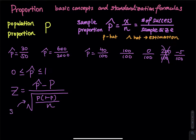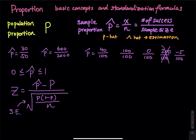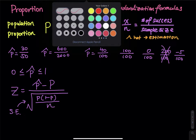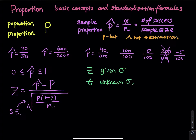A common question is: when you see a problem, how do you know it's a proportion problem versus a z problem or a t problem? For a z problem, sigma is given. For a t problem, sigma is unknown so you use the sample standard deviation s. For a proportion problem, you will see the keyword proportion.